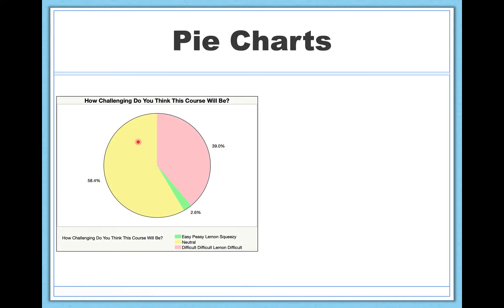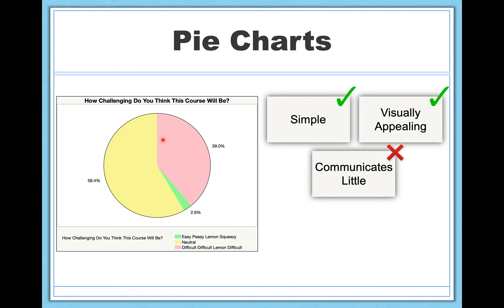So let's start with the humble pie chart. This is an example of a pie chart. This is real data from two stats courses I taught last quarter where I asked students on the first day of class how challenging they think the course will be. So you can see that the majority of people said neutral. A good proportion of people, 39%, said difficult, difficult, lemon, difficult. And only a tiny sliver of people, 2.6%, said the course would be easy-peasy, lemon, squeezy. These were actually the options that I chose for my survey. It tells you a little bit about me. So some strengths of this pie chart in general is that they're pretty simple to understand and they're also visually appealing. There's a lot of colors. People like looking at pie charts. But in my opinion, a key limitation of the pie chart is that it communicates relatively little information. It's only telling you the percentage of people in each category. It's only telling you frequency information, how frequent, how common something is or some response is. So if that's all you want to communicate, great. But if you want to tell somebody anything more than that, you're going to have to use something else.